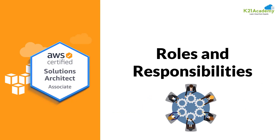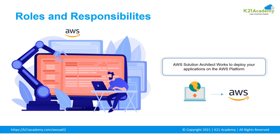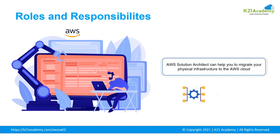The main role of an AWS solutions architect is to help deploy applications onto the AWS platform — a cloud computing platform. When it comes to organizations, the applications that need to be deployed become a whole lot more complex, which is where an AWS solutions architect can help. Ever since cloud computing became a thing, companies around the world have started migrating their physical infrastructure onto the cloud.